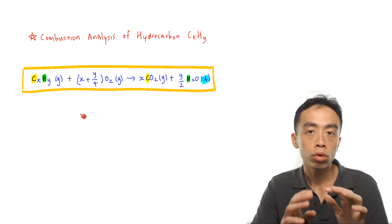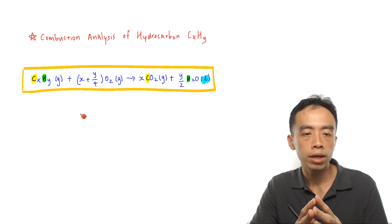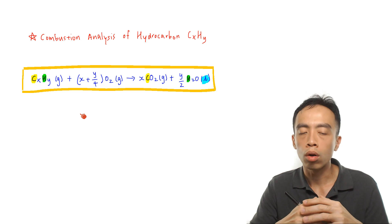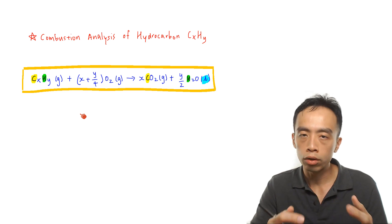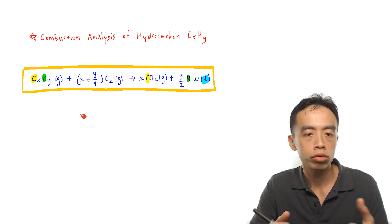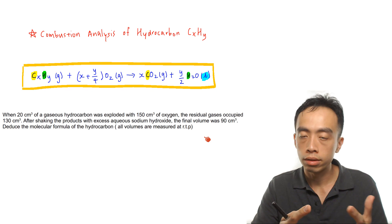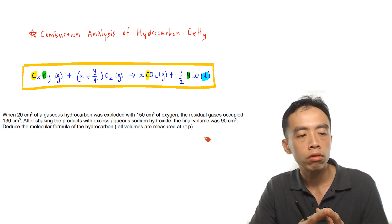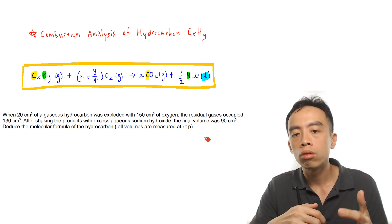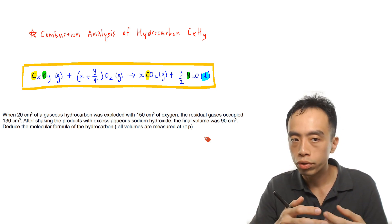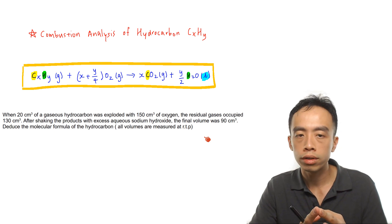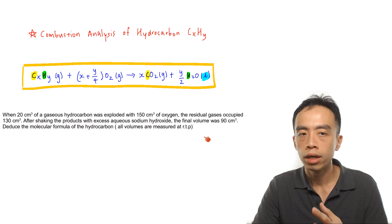You'll notice in questions, almost always the question will state that the combustion of the hydrocarbon is carried out in excess oxygen. Now let's go through an example of how to handle questions involving combustion analysis of a gaseous hydrocarbon.